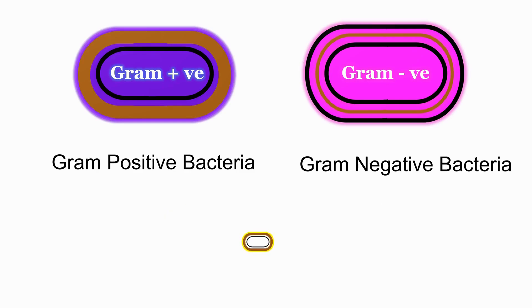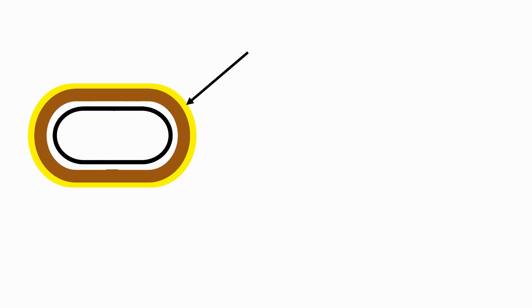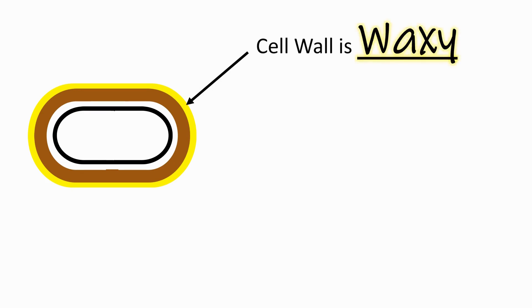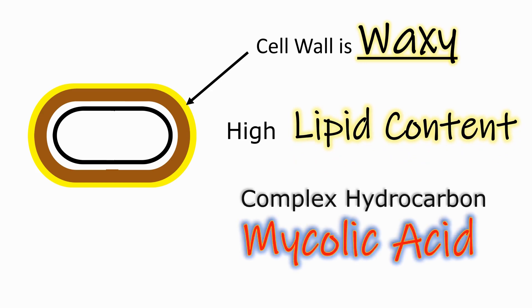There are certain bacteria which have a structure similar to gram-positive bacteria, but these bacteria are not stained easily by gram staining. The reason is that the cell wall of these bacteria is waxy in nature — the cell wall has a high lipid content, and the lipids in the cell wall are made from a complex hydrocarbon known as mycolic acid.